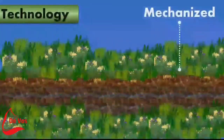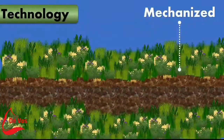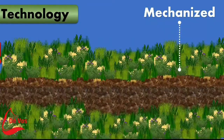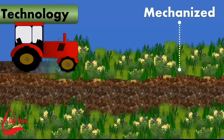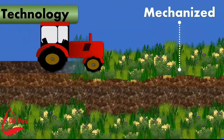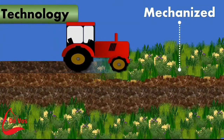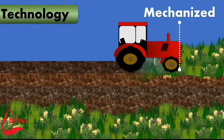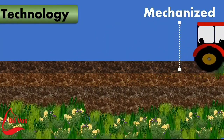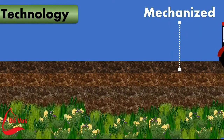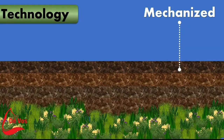Beyond improved seeds and crop protection tools, other technologies enable farmers to increase their productivity, such as modern irrigation practices, crop management products, mobile technology, fertilizers, and mechanization management and software for managing their farms.